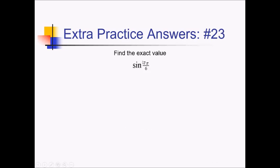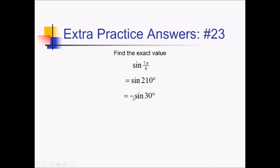For this problem, we want sine of 7 pi over 6. Let me convert to degrees first: 180 divided by 6 is 30; times 7 is 210 degrees. Now let me get a reference angle: 210 is 30 degrees away from 180, the closest x-axis angle. Since we're below the x-axis in quadrant 3, sine — the y value — is going to be negative down there. So this is going to be negative sine of 30, which is negative 1/2.